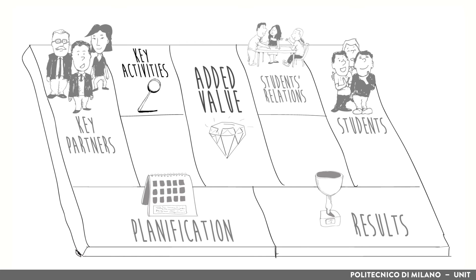What key activities will you build for out-of-class and in-class work? Which level of Bloom's taxonomy will you activate, and how and when?